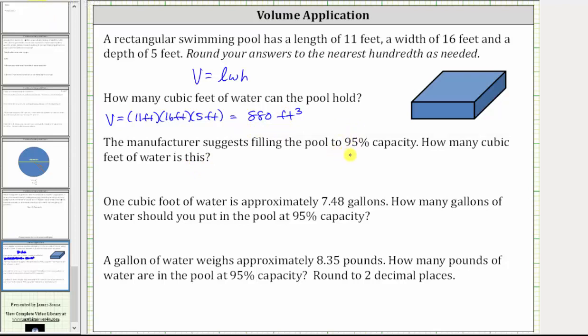And therefore to find 95% of 880 cubic feet, we need to find the product of 0.95, which is the decimal for 95%, times 880 cubic feet. 0.95 times 880 is equal to 836, giving us 836 cubic feet.